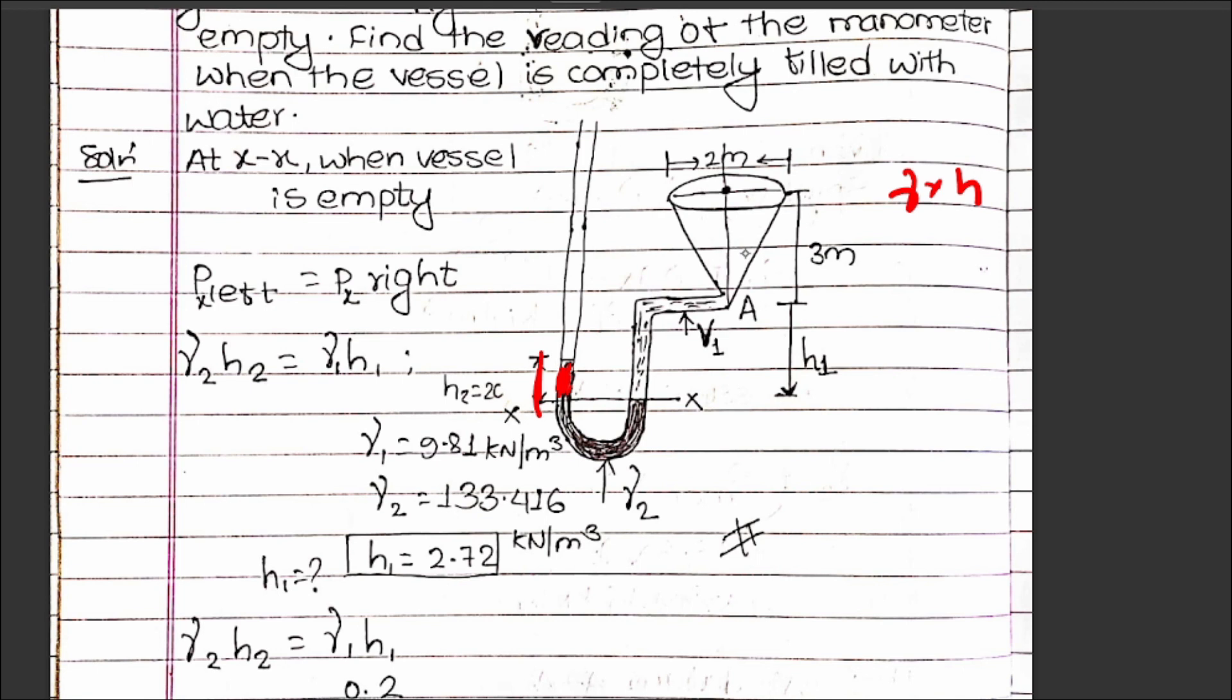Here, gamma for the manometer fluid is given. Gamma for water equals rho times g, which equals 9.81 kN per meter cubed. This is the specific weight of water.